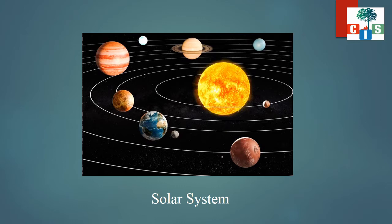Here is the solar system. You can see that the Sun is in the middle and all 8 planets revolve around the Sun. Can you see one fixed path — can you see the line? That line shows the fixed path in which these planets revolve around the Sun. This fixed path in which the planets revolve around the Sun is called the orbit.